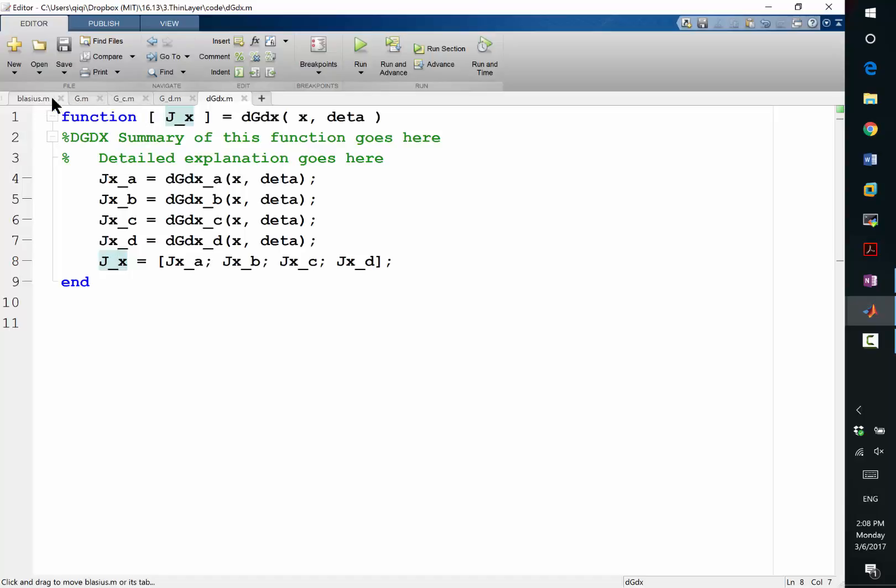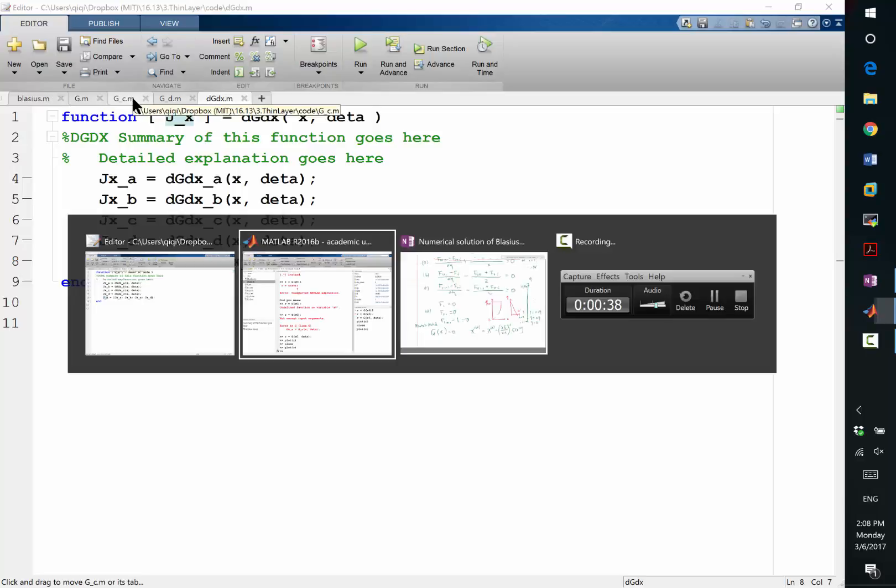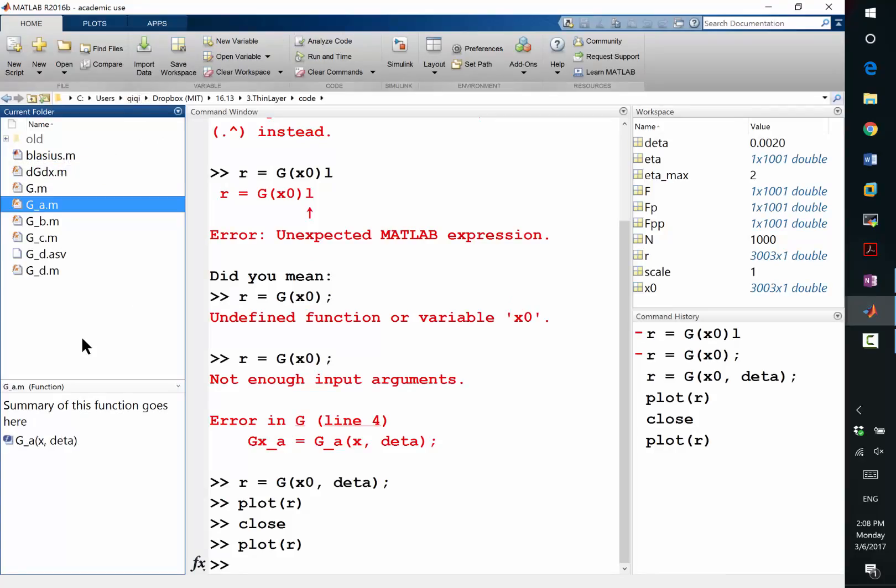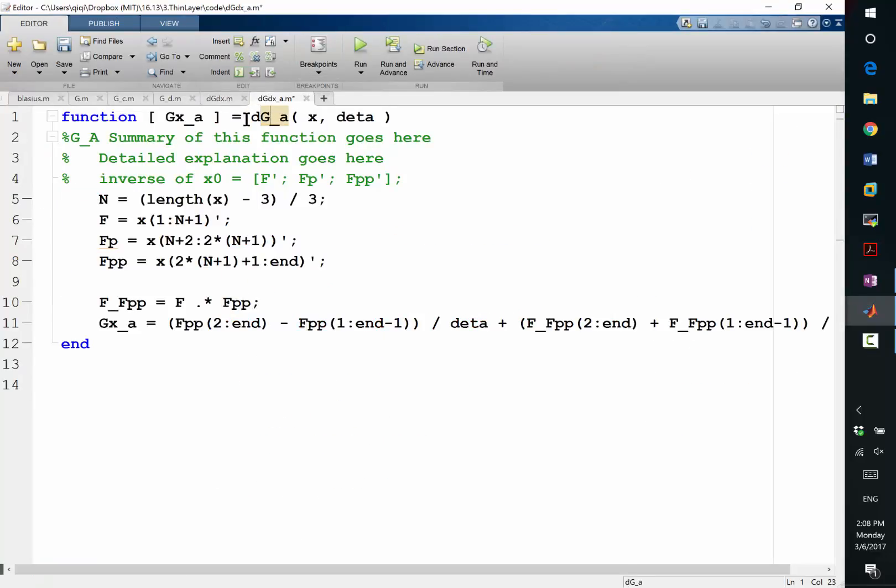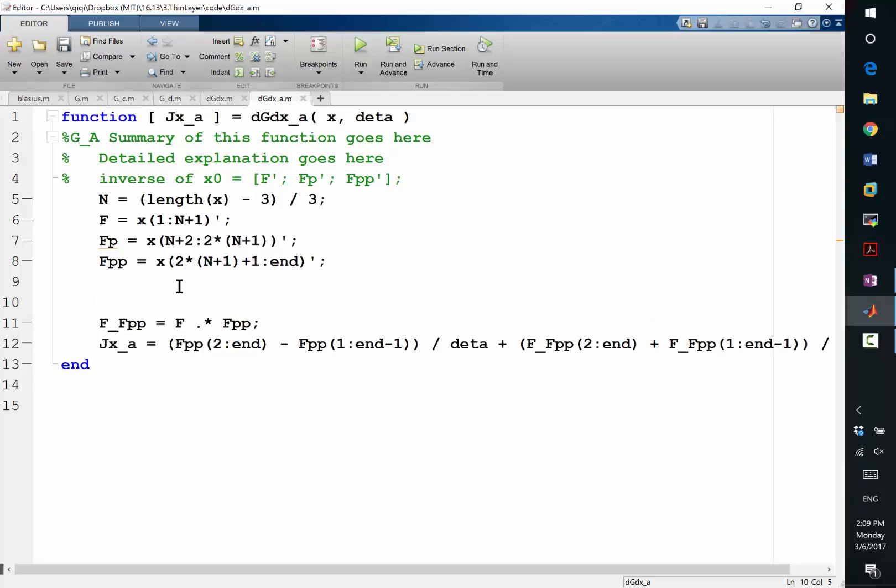So the remaining task is to actually code up residual computations, right? So I'm going to copy the g_a into dgdx_a. So here it'll be dgdx_a. All right. These four lines from 5 to 8 are exactly the same, right? I still want to extract f, fp, fpp from the vector x. But now instead of computing the g_a, I want to compute the jx.